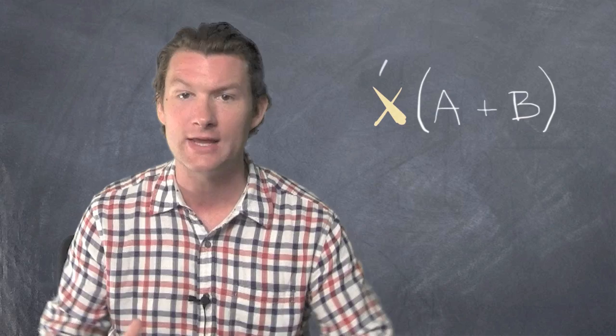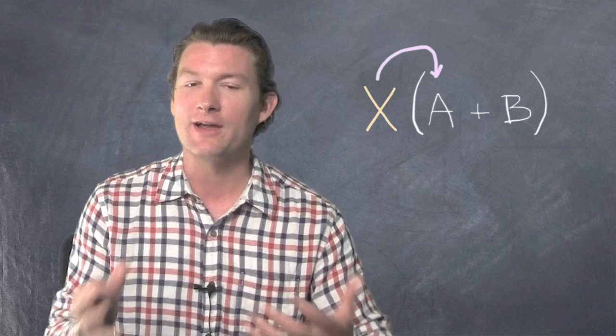The distributive property is where you have something on the outside of parentheses and it pays a visit to the things on the inside. Now it's called the distributive property because technically the thing on the outside is being distributed to the things on the inside of the parentheses.